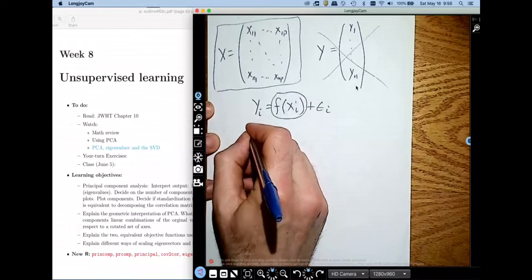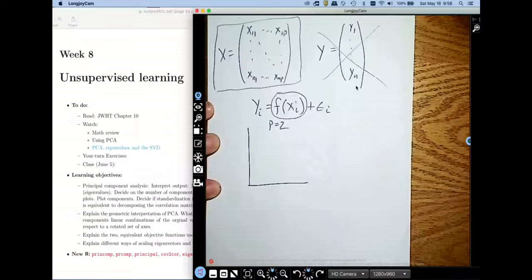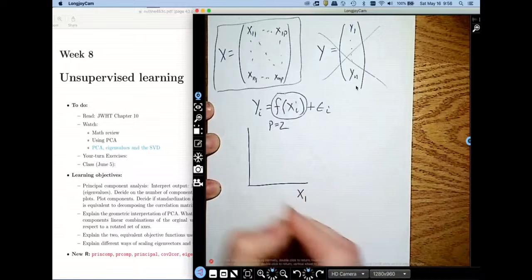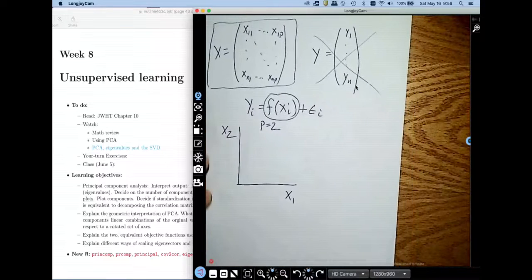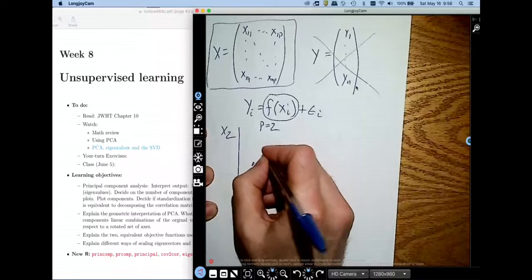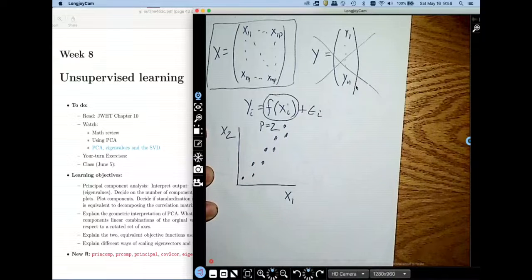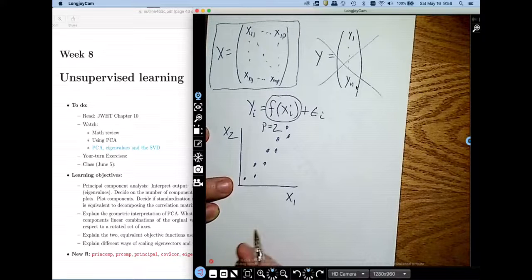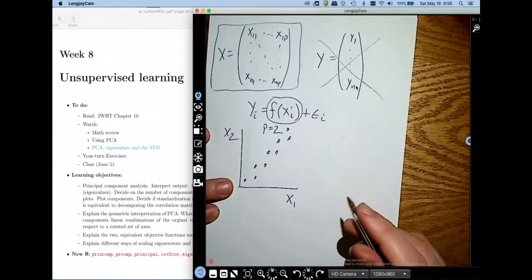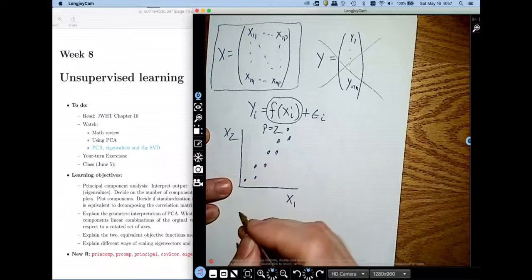The dimensionality reduction problem is going to look for the following types of features. In order to understand this, let's take a very simple situation where I have p equal to two x's. Here's x1, here's x2. Let's say I observe the following scatter plot, and I'm rigging this to have a very strong correlation between x1 and x2.